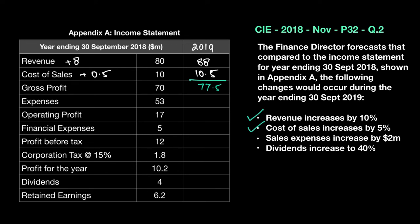Now the expenses go up by 2 million, so that amount increases by 2 million — plus 2 — which means expenses become 55. I can now solve the operating profit: 77.5 minus 55 gives me 22.5. That's my operating profit.